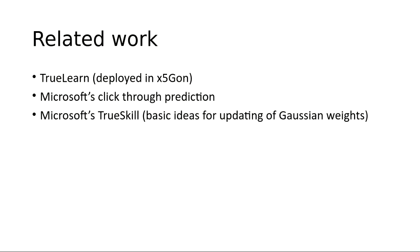The algorithm was not developed in a vacuum. It relates to TrueLearn, which is deployed in the X5GON project, where it is used to model and predict interest and skill levels in relation to educational materials. The whole project of recommending materials to blind students is part of X5GON, a European project creating machine learning tools to empower students to access open educational materials. The mathematics behind the model is inspired by Microsoft's TrueSkill algorithm, from which the basic idea of updating Gaussian variables takes its inspiration.